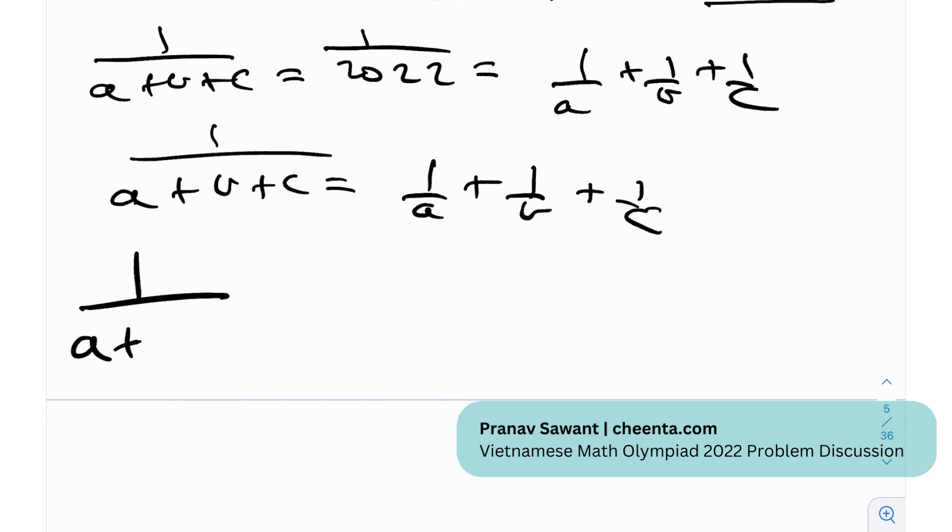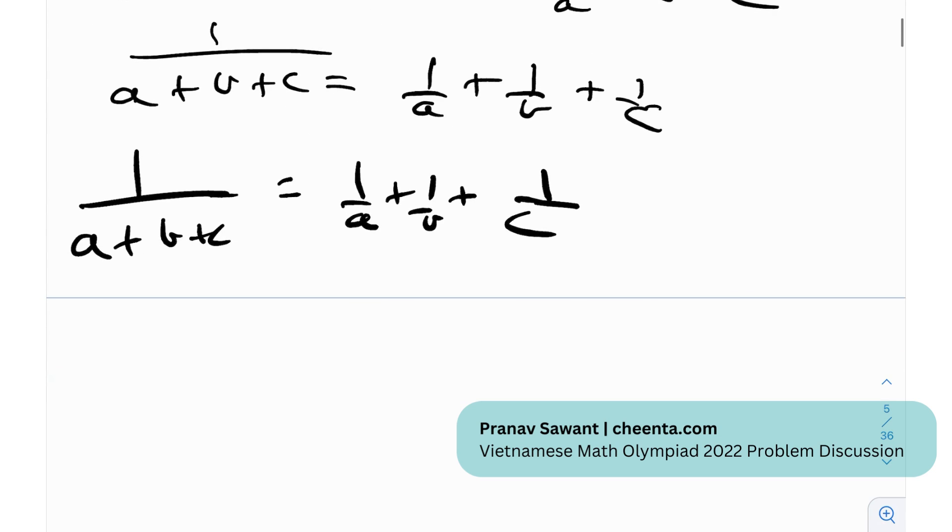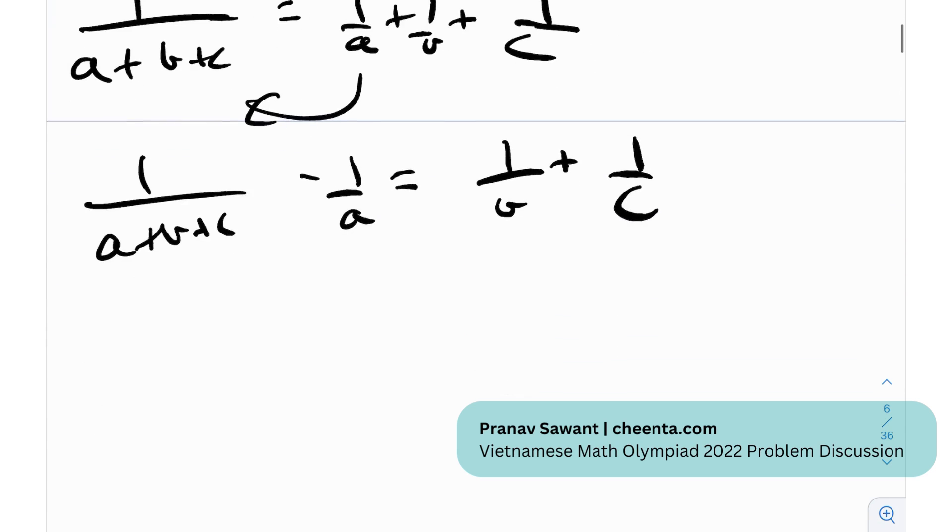So 1 by a plus b plus c equals 1/a plus 1/b plus 1/c, right? This is what is given to us. Now if I just bring this 1/a to this side, I'll get 1/(a+b+c) minus 1/a equals 1/b plus 1/c, okay? That's great.